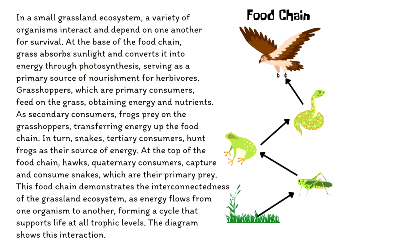In a small grassland ecosystem, a variety of organisms interact and depend on one another for survival. At the base of the food chain, grass absorbs sunlight and converts it into energy through photosynthesis, serving as a primary source of nourishment for herbivores. Grasshoppers, which are primary consumers, feed on the grass. As secondary consumers, frogs prey on the grasshoppers, transferring energy up the food chain. In turn, snakes — tertiary consumers — hunt frogs as their source of energy. At the top of the food chain, hawks — quaternary consumers — capture and consume snakes. This food chain demonstrates the interconnectedness of the grassland ecosystem as energy flows from one organism to another, forming a cycle that supports life at all trophic levels.